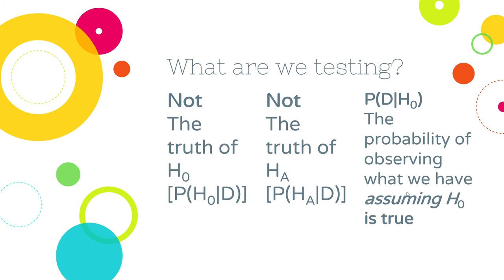For example: what's the probability of getting 82% remission in 100 people if your drug did not affect cancer? If the normal remission rate is 13%, what's the probability I get 82% remission when under the null I'd expect only 13%? That probability is probably very low. So then I conclude this drug probably makes a difference for cancer — that's evidence.